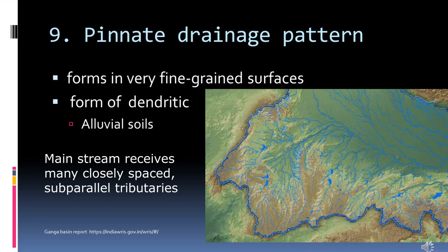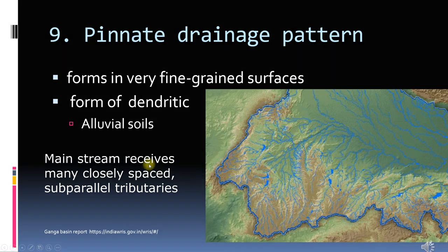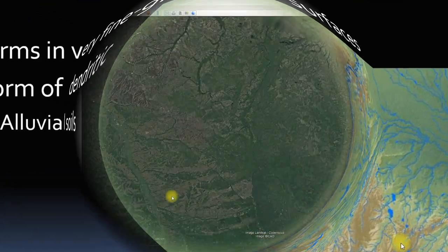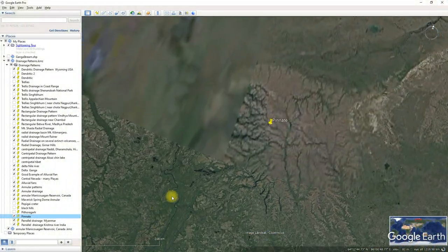The last and ninth pattern is the pinnate type. It forms on a fine-grained surface and is a special case of the dendritic pattern. The Ganga Basin in India is an example of this.